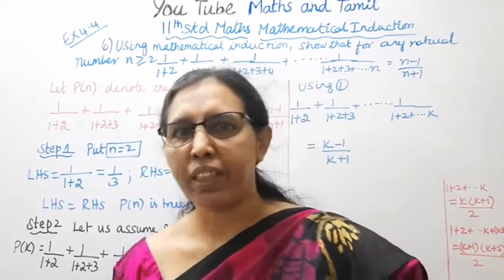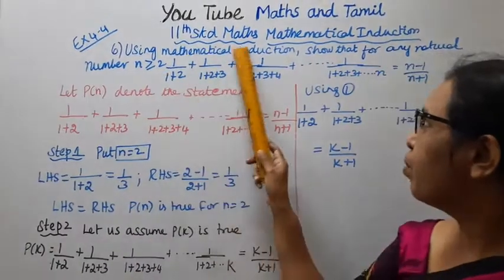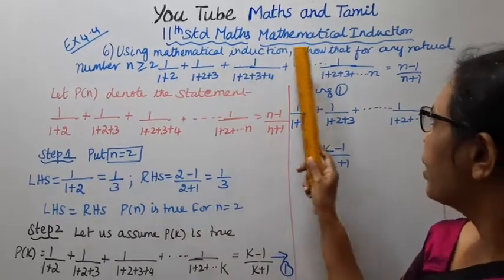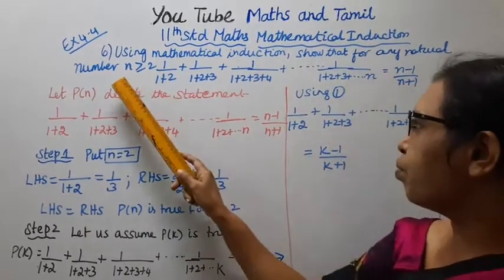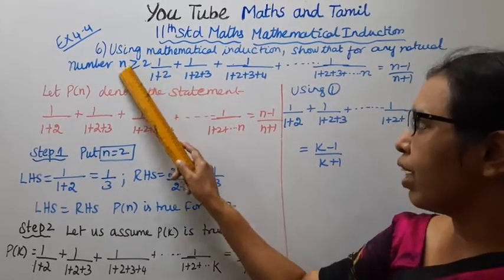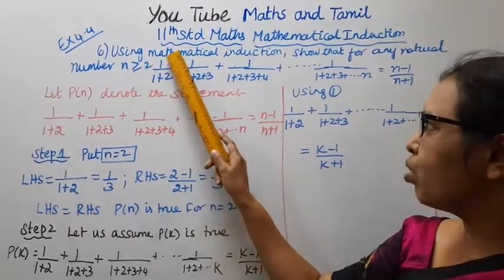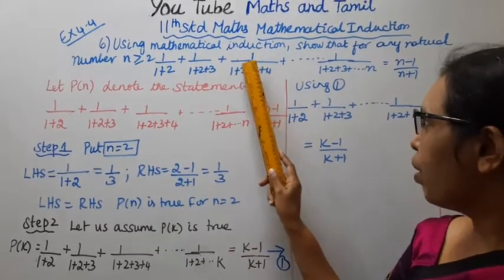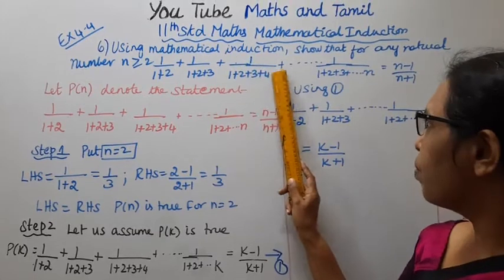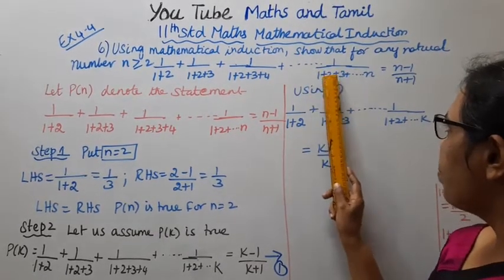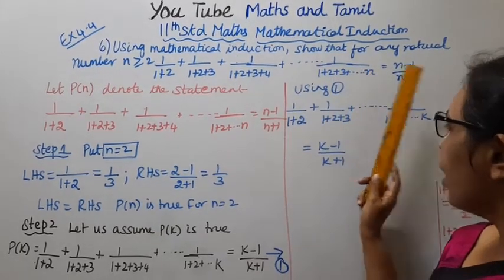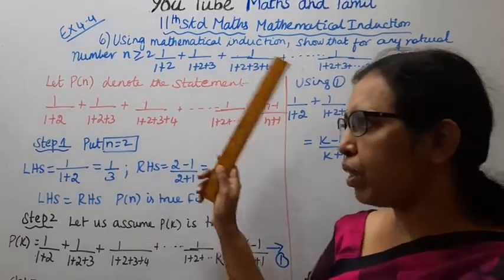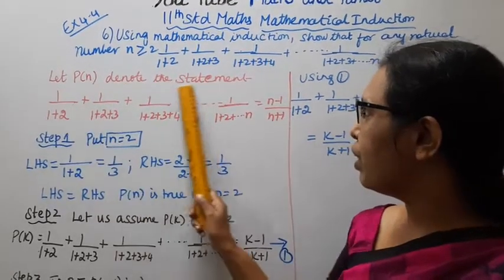Hello students, welcome to Max and Tamil channel. 11th standard math, mathematical induction, exercise 4.4, problem 6. Using mathematical induction, for any real number n greater than or equal to 2, prove that 1/(1+2) + 1/(1+2+3) + ... + 1/(1+2+3+...+n) equals (n-1)/(n+1).